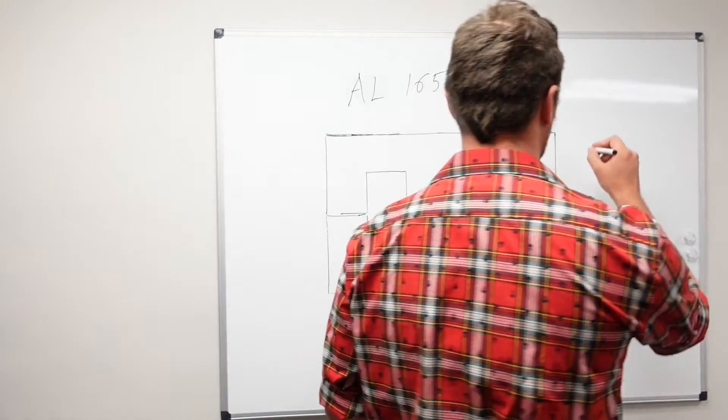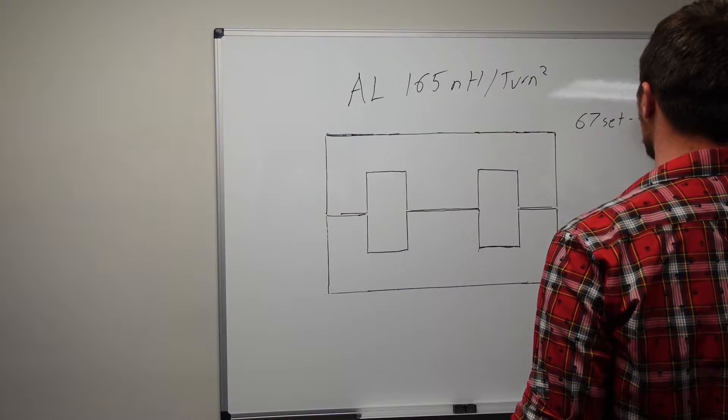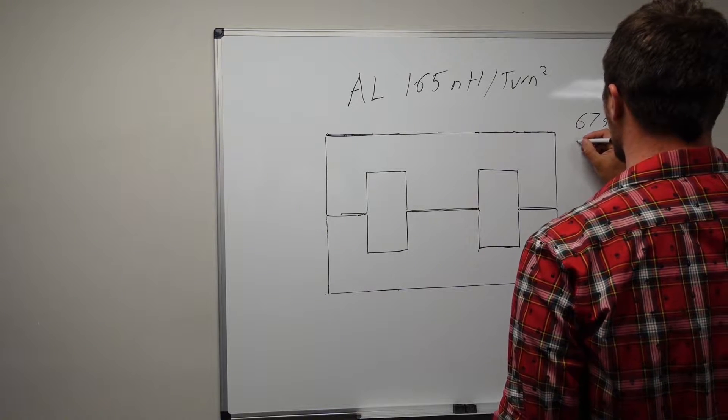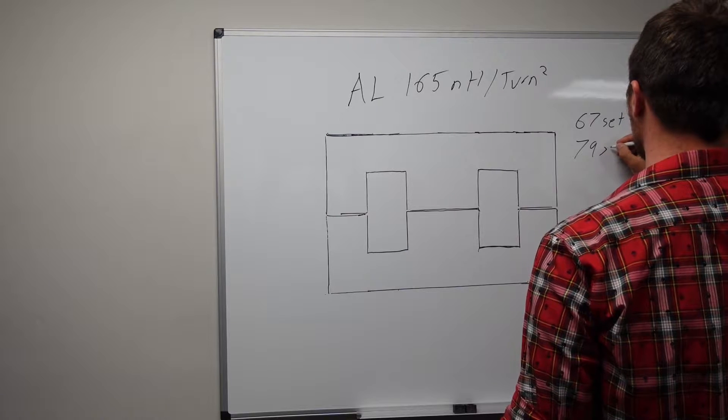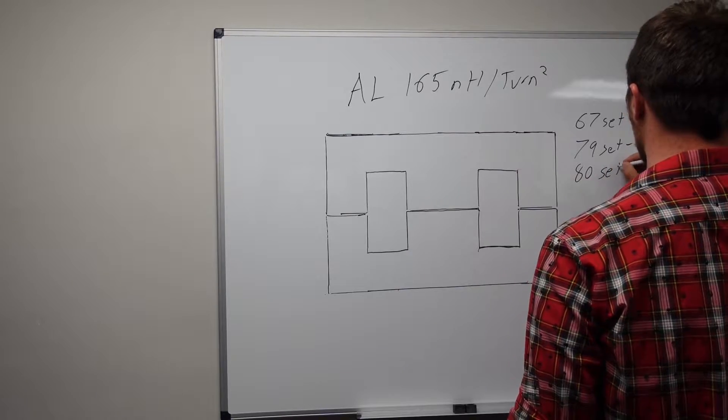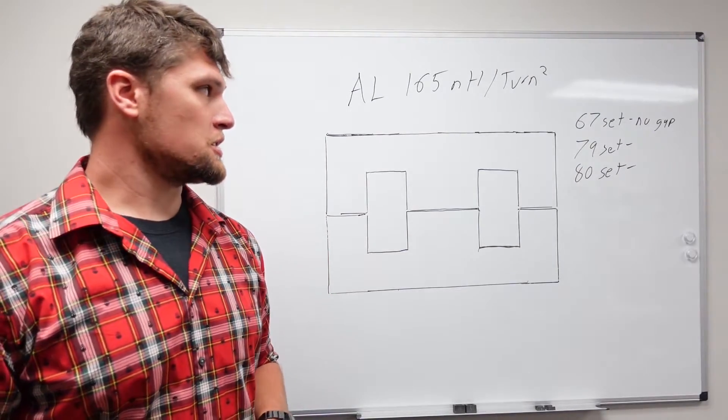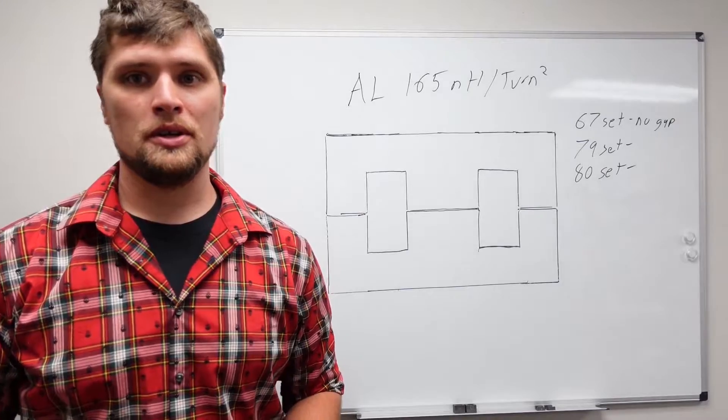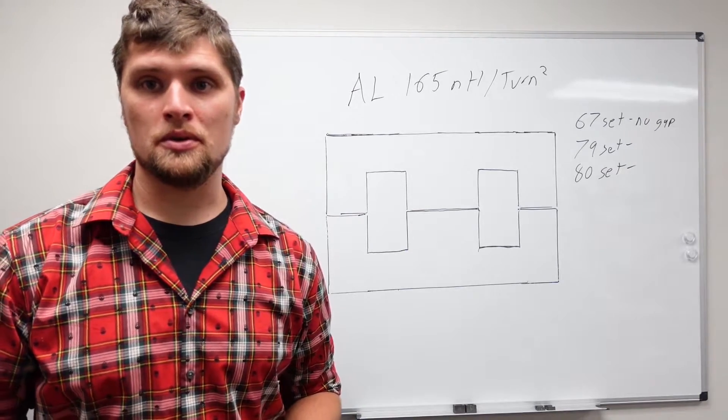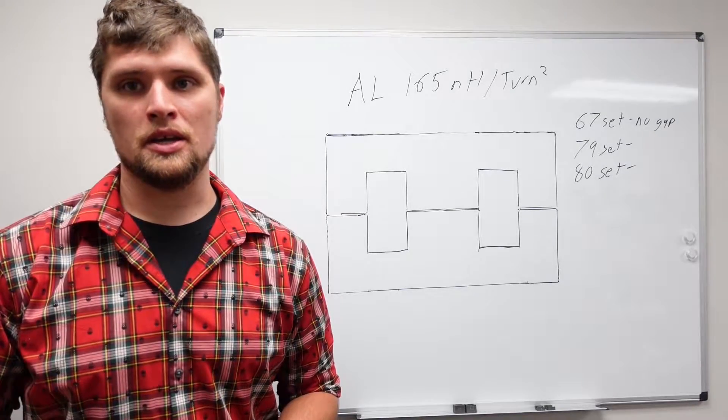So we're going to be looking at the 67 material, the 80 set. We're going to gap all the core sets to that same 165 nanohenry per turn and then we'll do some characterization. The first step is going to be to go over to our machine shop and gap the cores.